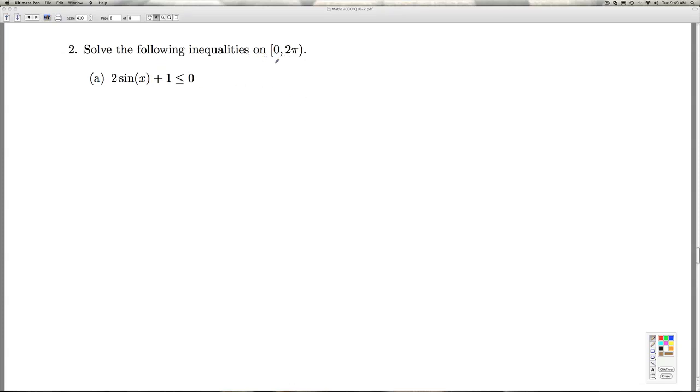We're asked to solve the following inequalities on the interval [0, 2π). All of these inequalities are considered nonlinear inequalities, and so we solve all nonlinear inequalities the same way by making use of what's called a sign diagram. This is sign S-I-G-N, meaning plus minus, not trigonometric sine.